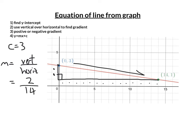And as the line is going down from left to right, it's a negative gradient. So simplifying that, we get m is negative 1/7.